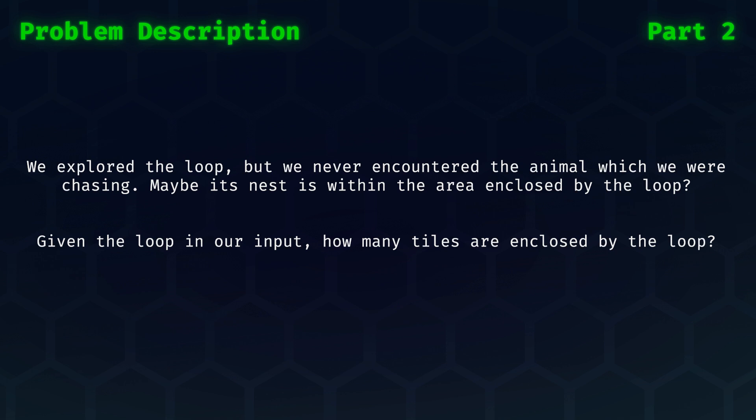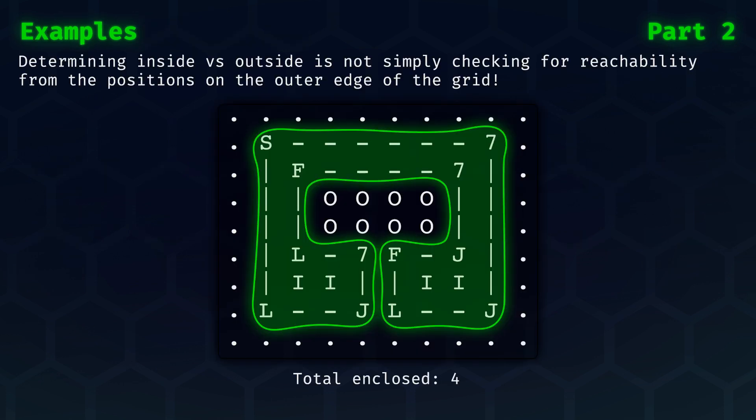Given the loop in our input, how many tiles are enclosed by the loop? Here is a key example that's provided us today. Determining what's inside and what is outside is not simply checking for reachability from the positions on the outer edge of the grid.